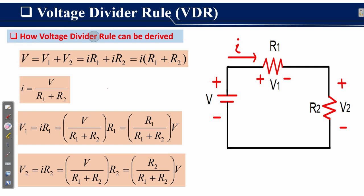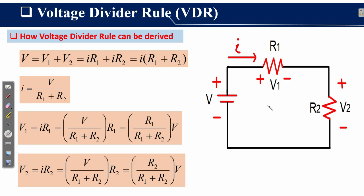Now we will derive the voltage divider rule. We consider the same circuit as before: a series combination of R1 and R2 connected to applied voltage source V. We first find the current I by applying Kirchhoff's Voltage Law around the closed loop. According to KVL, the sum of voltage rises equals the sum of voltage drops, giving us: V equals V1 plus V2.